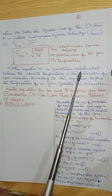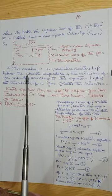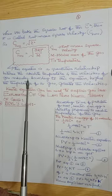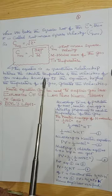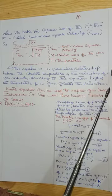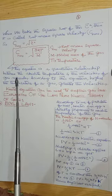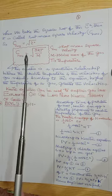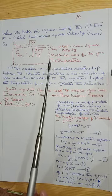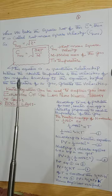Basically, this equation is a quantitative relationship between absolute temperature and the velocity of gas molecules. According to this equation, the higher the temperature of a gas, the greater the velocities. Here we have taken the concept of mean square velocity and root mean square velocity.